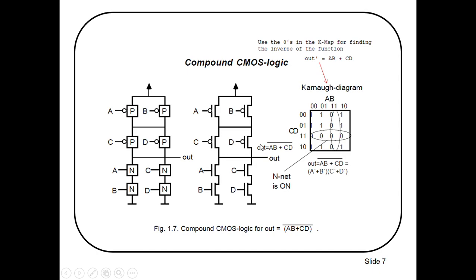Let's discuss the implementation of a complex function: we want to implement AB + CD'. We start construction of the pull-down network. A and B are in series, so in the pull-down network they appear in series. Similarly, C and D are in series. The AB combination and the CD combination are in parallel to each other in the pull-down network, using only NMOS transistors.